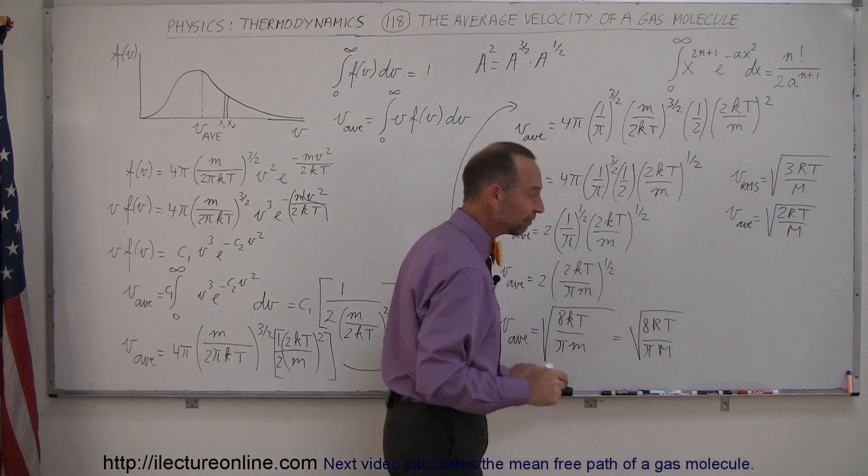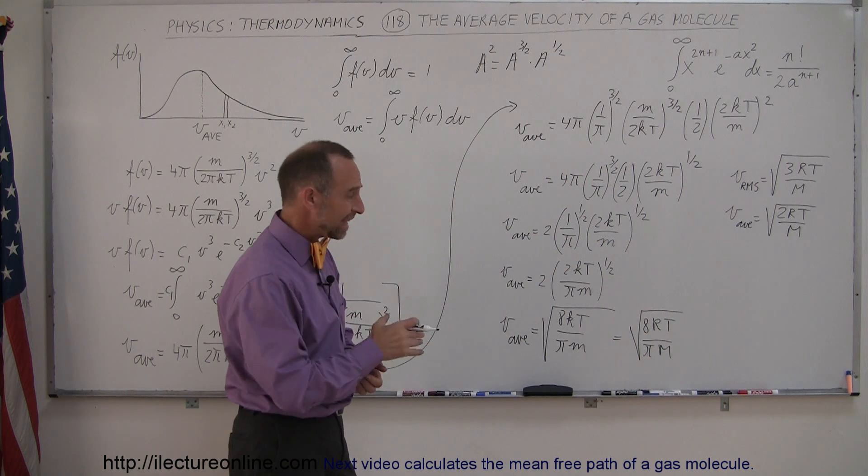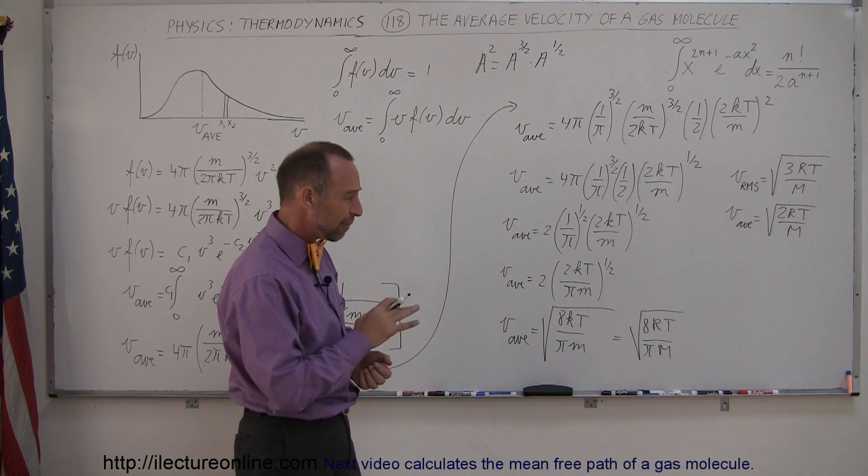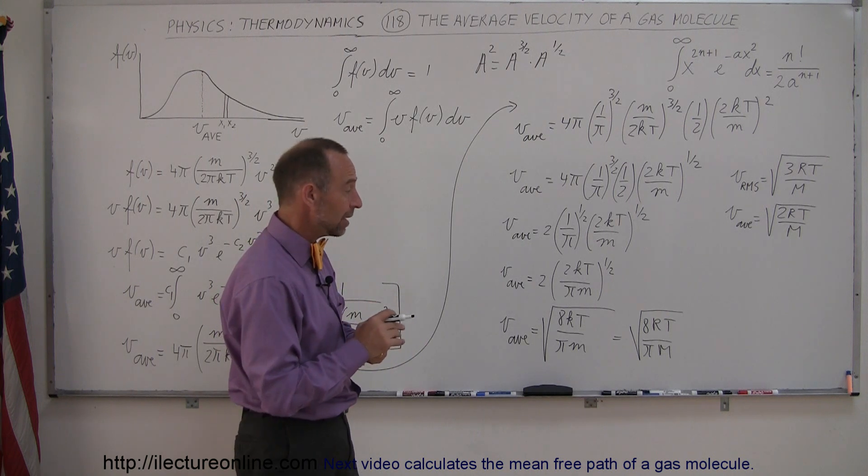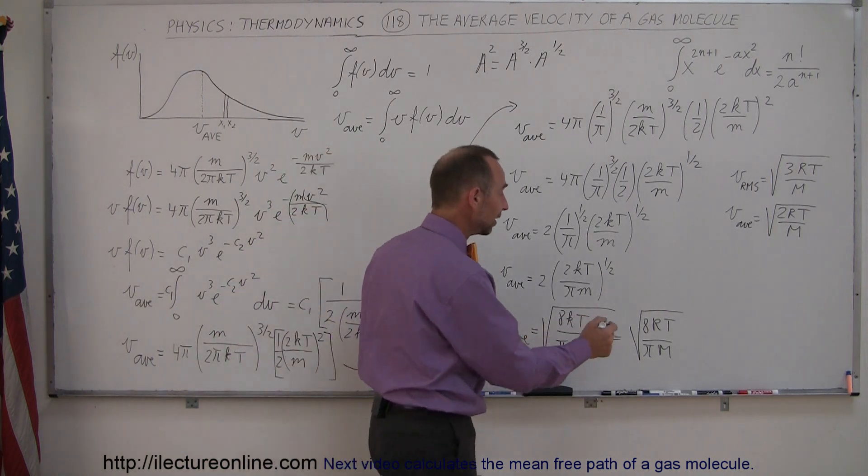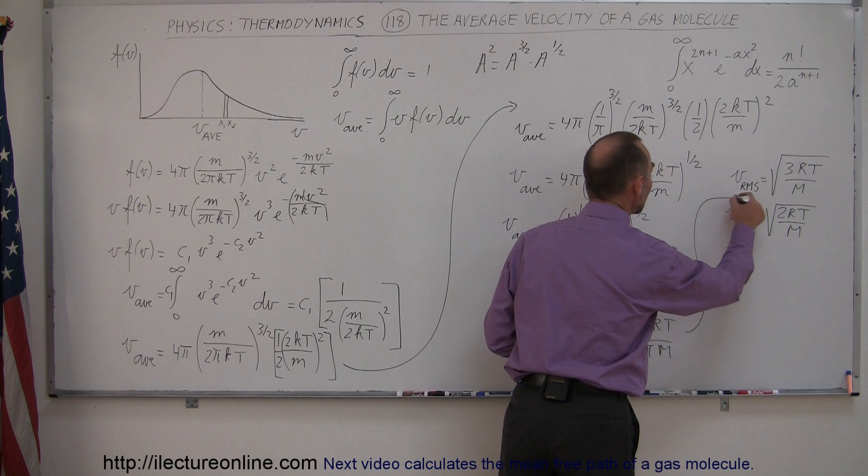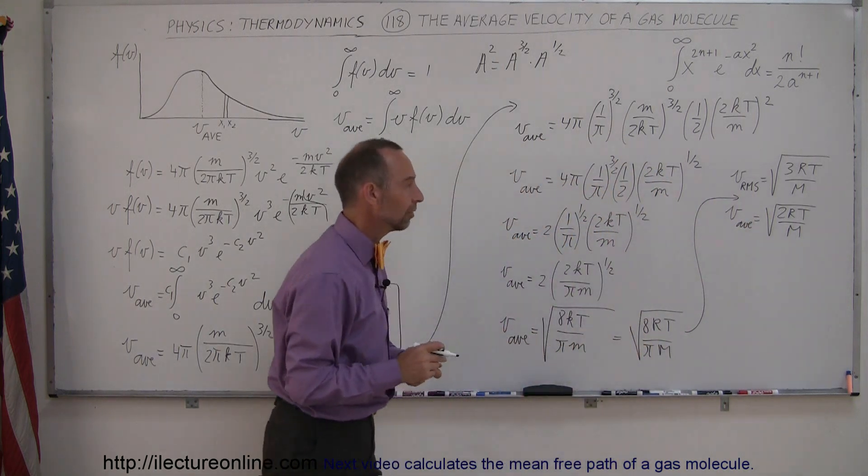Well, what's 8 divided by π? Well, π is about 3, so 8 divided by π is less than 3, but it's greater than 2, which means that value falls right in between these two right there. It's smack in between.